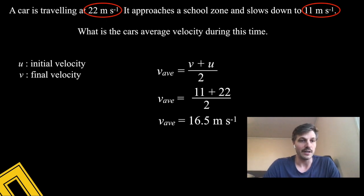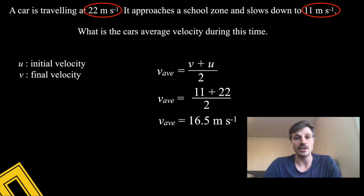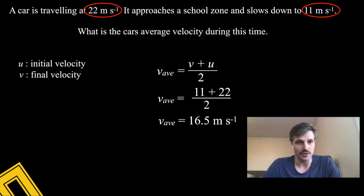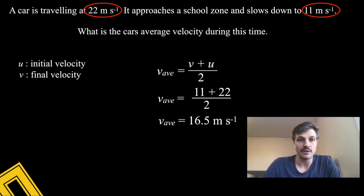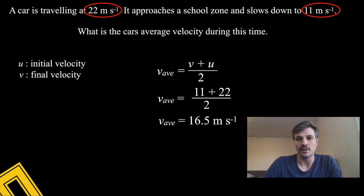Using the same data, we could also ask: what is the car's change in velocity? It's simply final minus initial — v minus u — so 11 minus 22 gives us −11 m/s as the change in velocity.